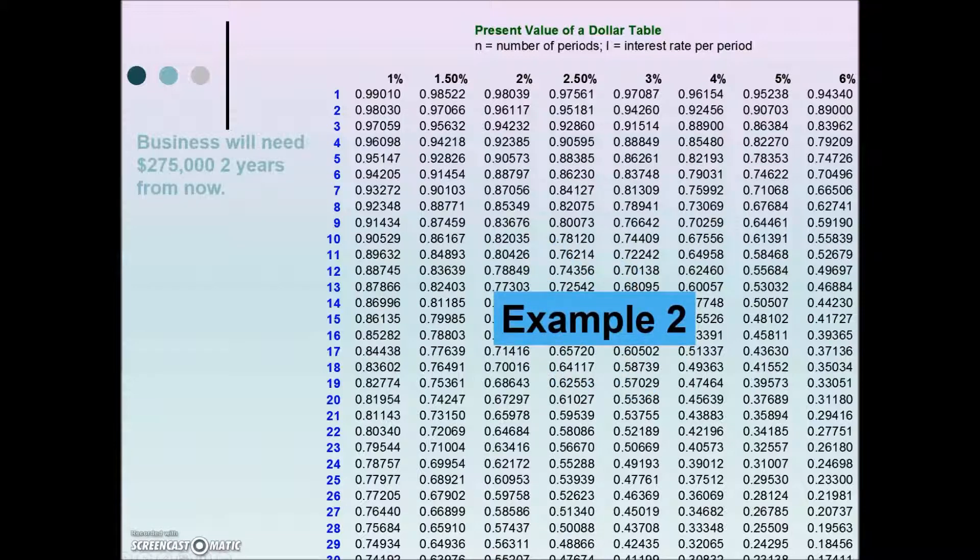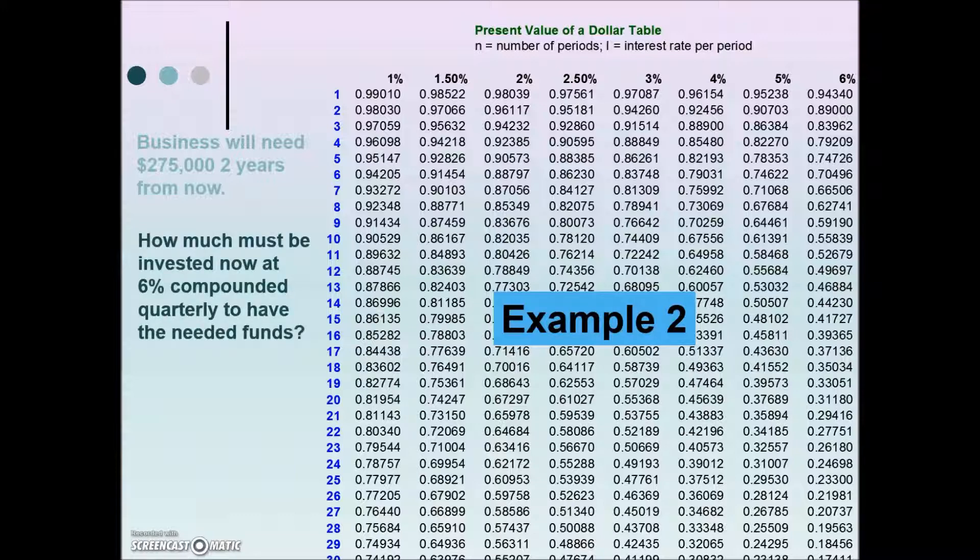Let's look at another example. A business estimates that they will need $275,000 two years from now. How much must be invested now, the present value, at 6% compounded quarterly to have the needed funds?